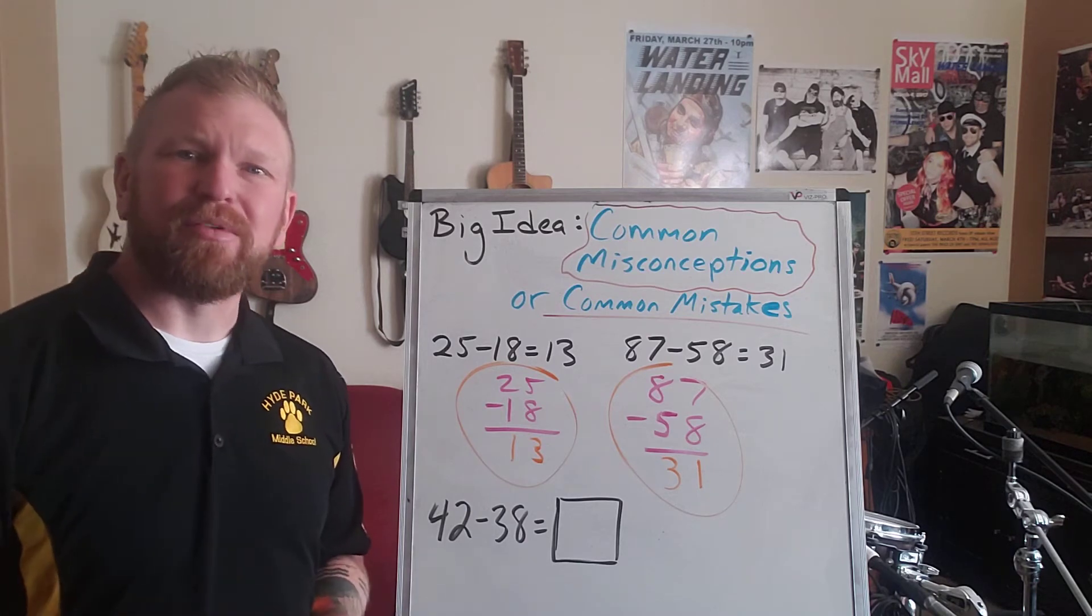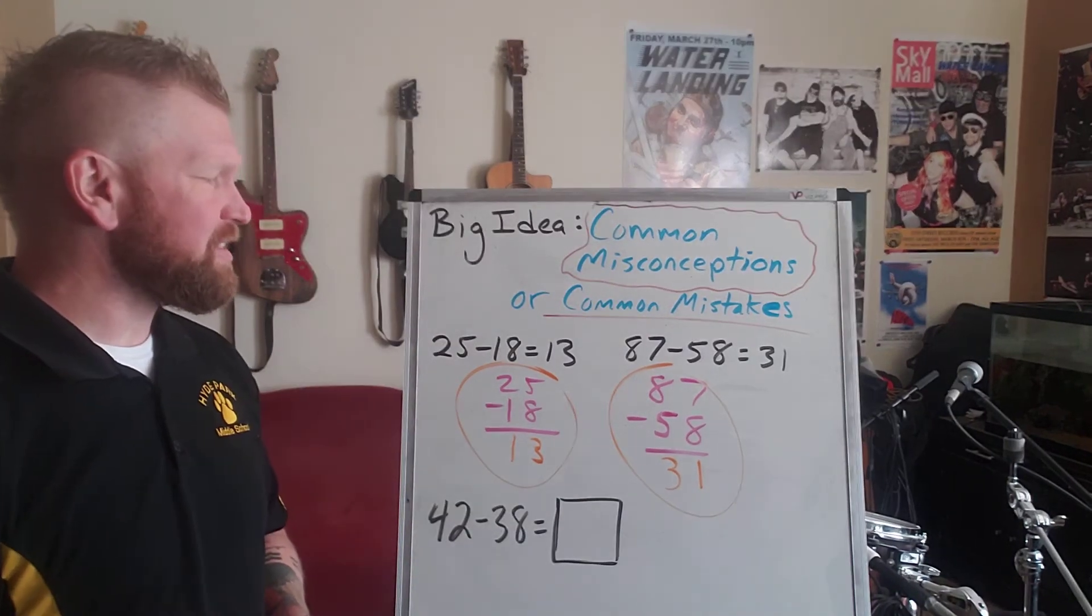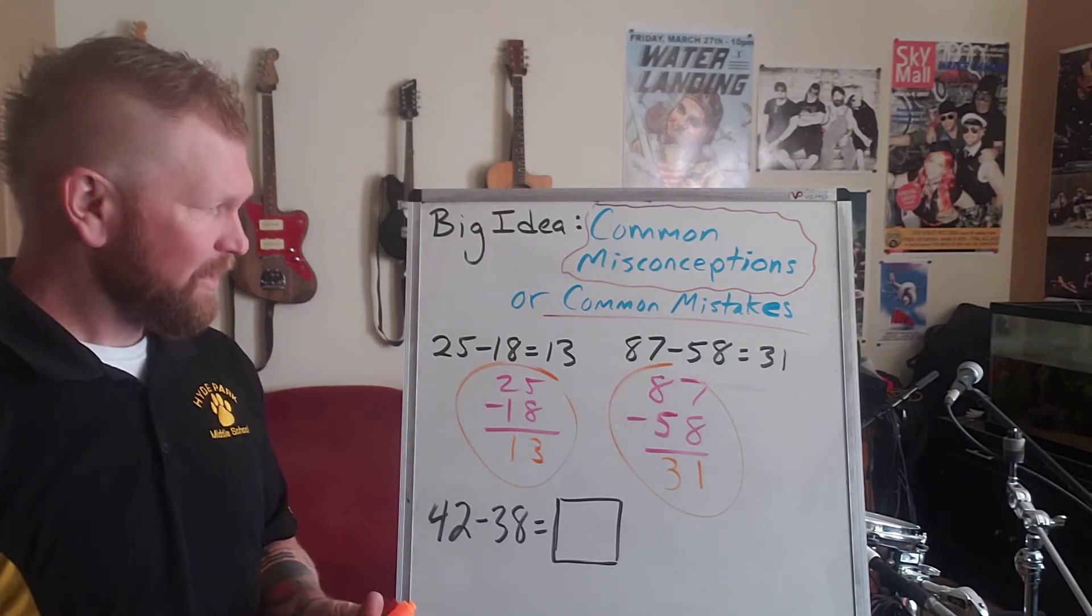And if you think about the algorithm, how you do the ones place first, then you go to the tens place using the algorithm, you might see what's happening.